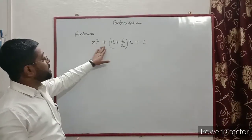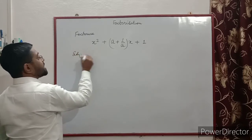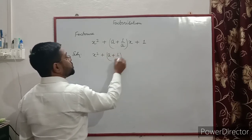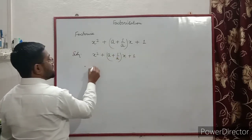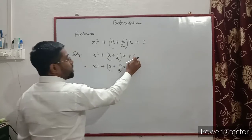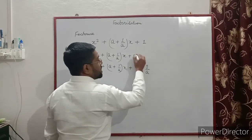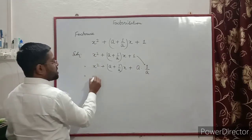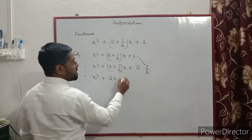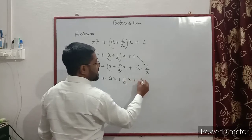Factorize x² + (a + 1/a)x + 1. Solution: we write x² + (a + 1/a)x + 1. We can write a × (1/a) — a and 1/a cancel giving 1. So the middle term becomes ax + (1/a)x.